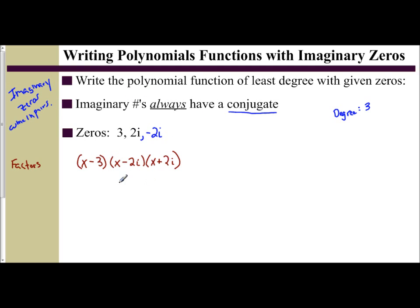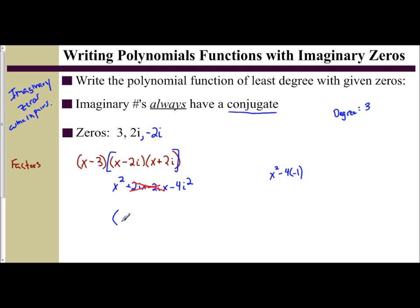Whenever you have imaginary zeros and real zeros together, always distribute out the imaginary factors first. So x times x is x squared, x times 2i gives positive 2ix, negative 2i times x is negative 2ix — these cancel — and negative 2i times 2i is negative 4i squared. Since i squared equals negative 1, we get x squared minus 4 times negative 1, which gives x squared plus 4.